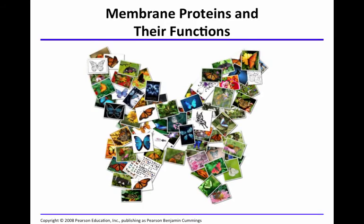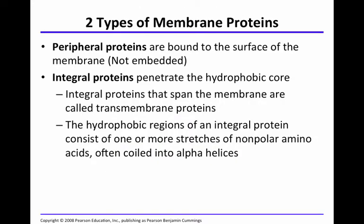The cell membrane is a mosaic. There are two main types of membrane proteins: peripheral proteins, which are bound to the surface of the membrane but not embedded in the lipid bilayer, and integral proteins, which penetrate the hydrophobic core and span the membrane — these are often called transmembrane proteins.